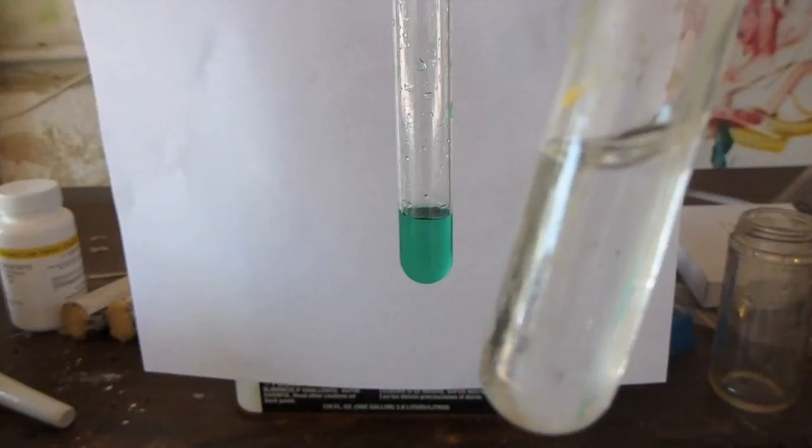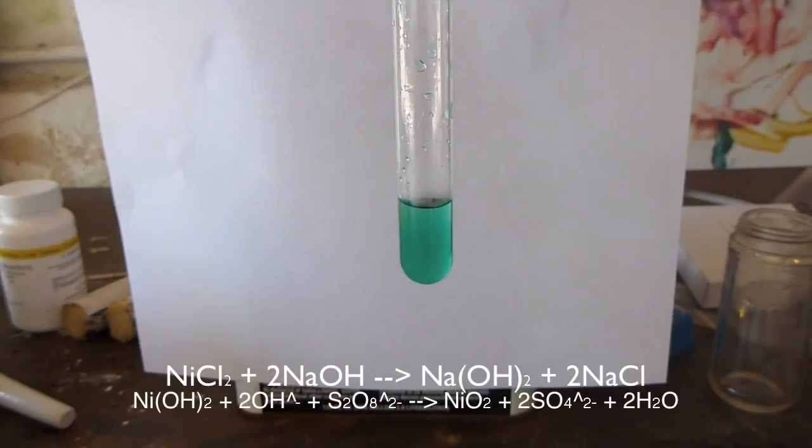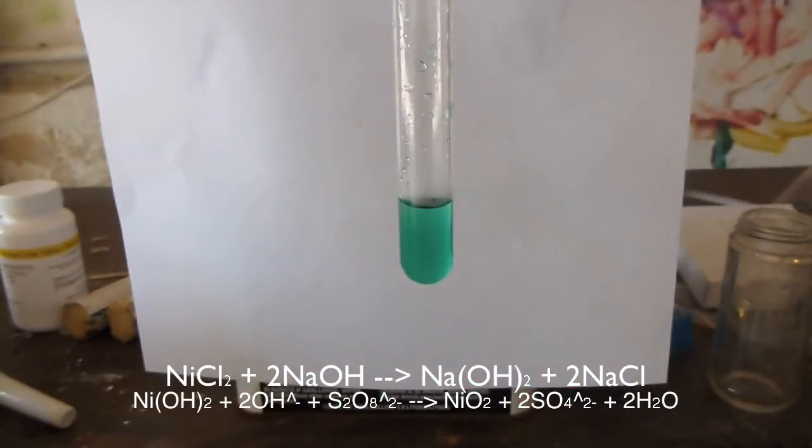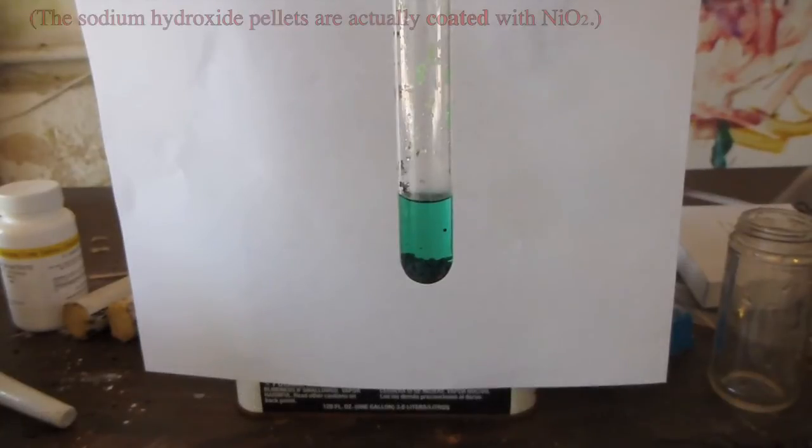And sodium persulfate is a very strong oxidizer, but it really will only work in alkaline conditions. So I'm adding now some sodium hydroxide, and the instant I add the sodium hydroxide, you can see that there are black pellets formed at the bottom of the test tube.